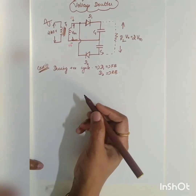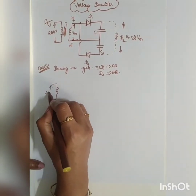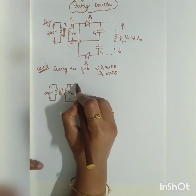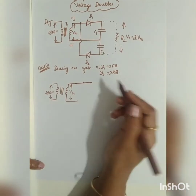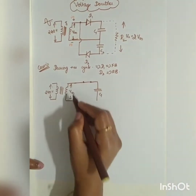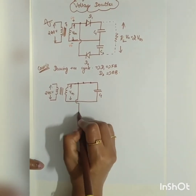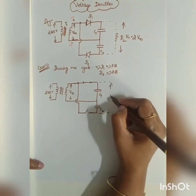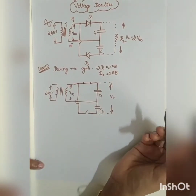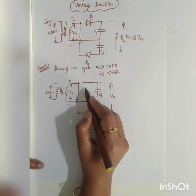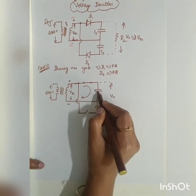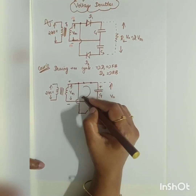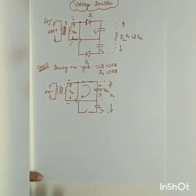Drawing the circuit for Case 1: with the 240-volt transformer, the maximum step-down voltage is Vm. Diode D1 acts as a closed switch and capacitor C1 is in the circuit, while diode D2 acts as an open switch so C2 has no connection. Current flows from positive to negative, and capacitor C1 charges to the peak value Vm.